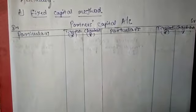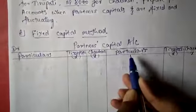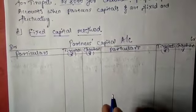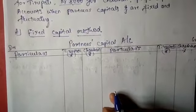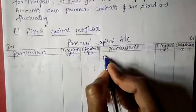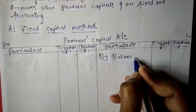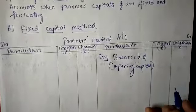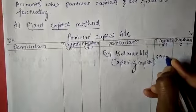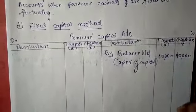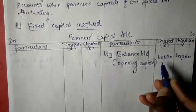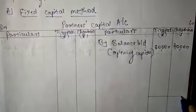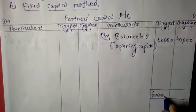Particulars means we are mentioning the transactions. Under the fixed capital method, the partner's capital account has only one entry — that is, the opening capital balance brought down. Here, the opening capital is ₹60,000 for Tirupati and ₹40,000 for Chauhan, which they invested initially. Since there is only one entry, we close down the account: ₹60,000 for Tirupati and ₹40,000 for Chauhan.